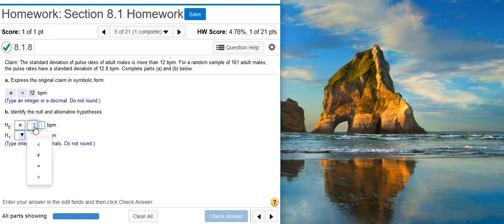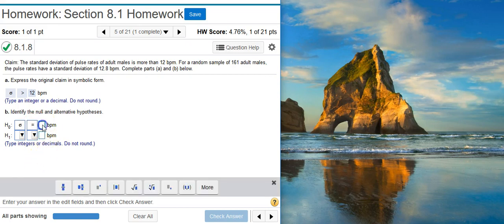The null hypothesis is, by definition, a statement of equality. So I want to select the equal sign. And then this value is the claimed value, which we saw earlier was 12. There's my null hypothesis.